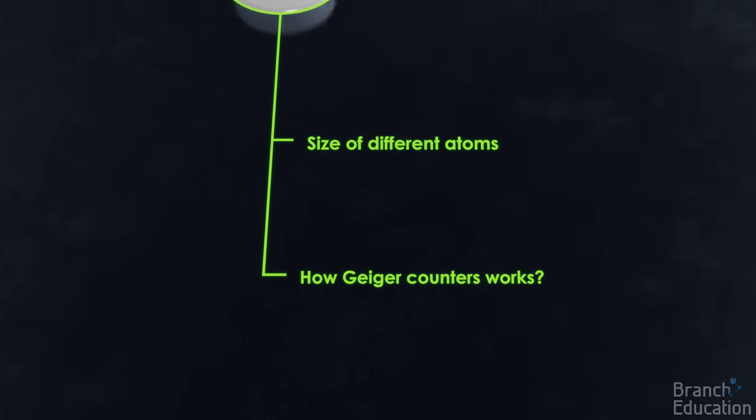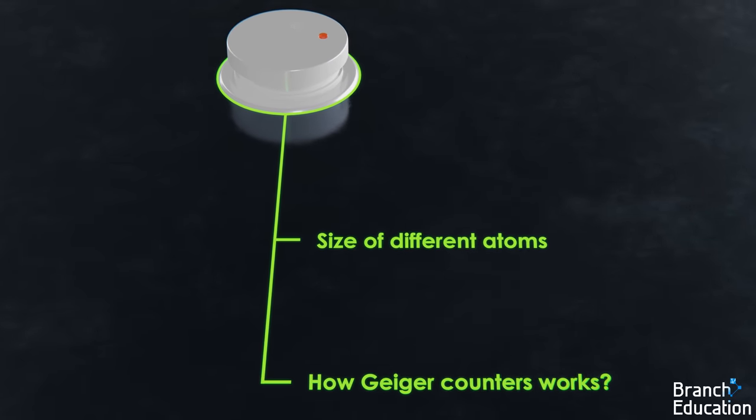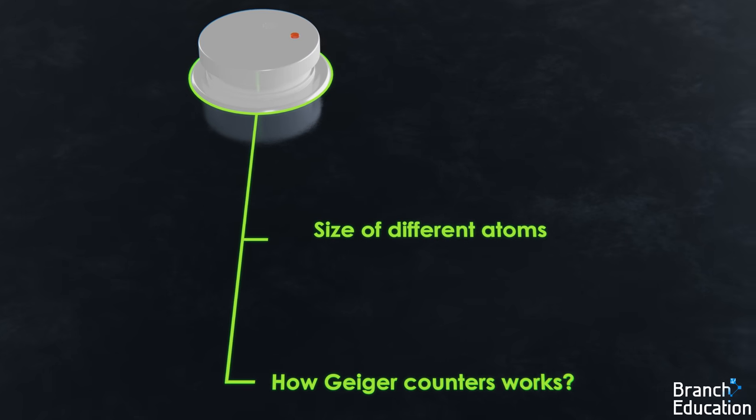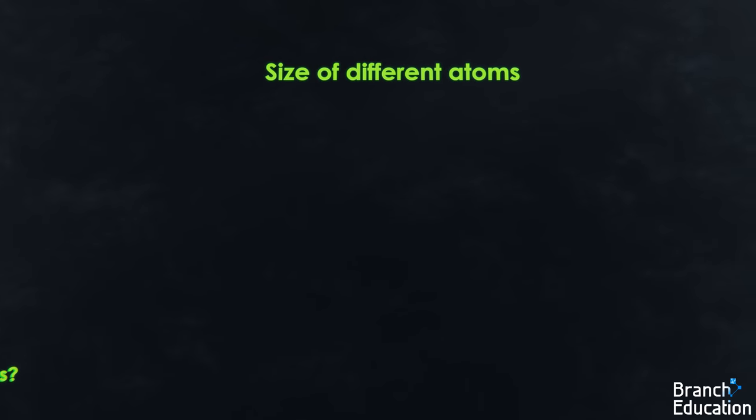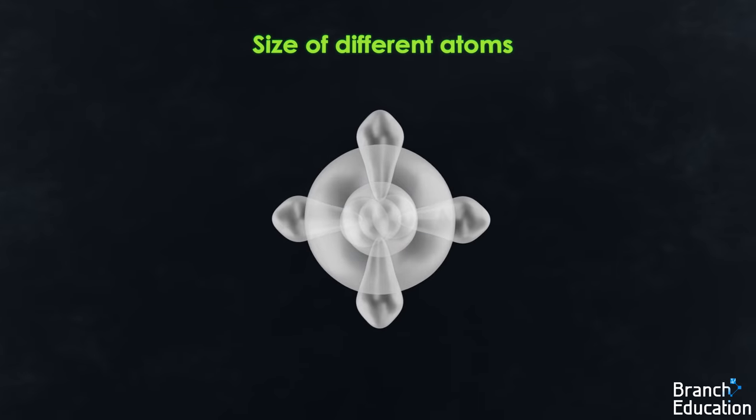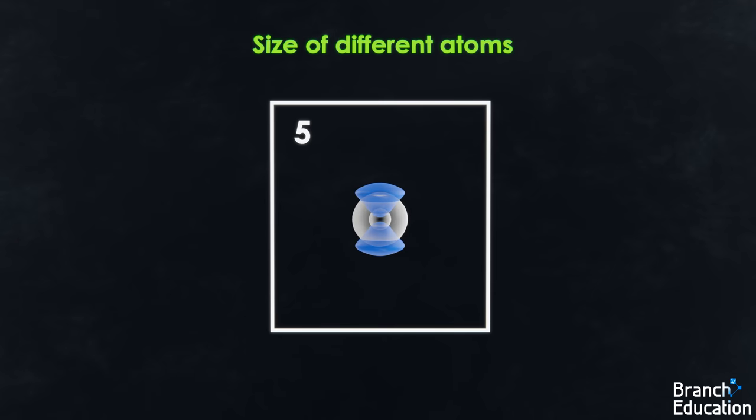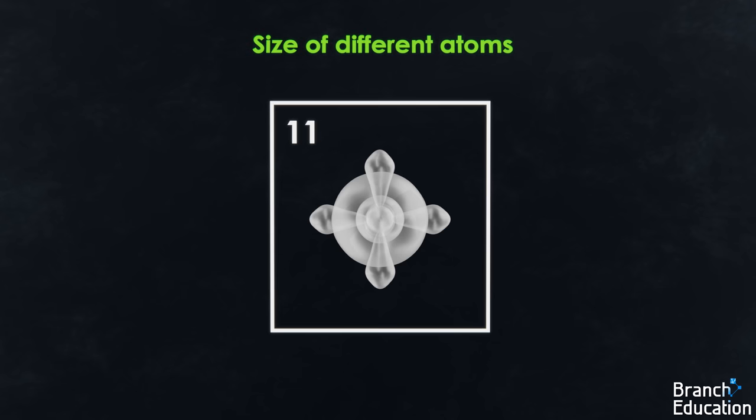Okay, so let's quickly talk about two branches related to smoke detectors: atomic size and Geiger counters. As you may know, atoms are incredibly small. But do you think that as the atomic number increases, the size of the atom also increases? Let's check.